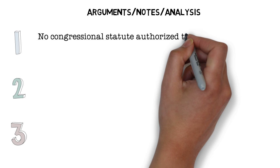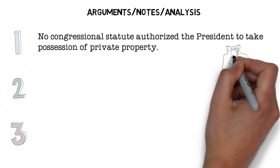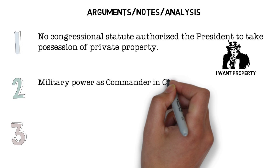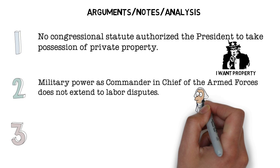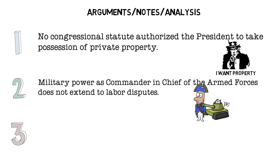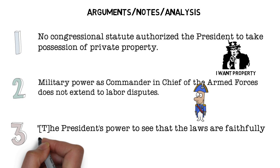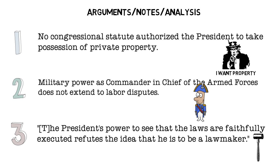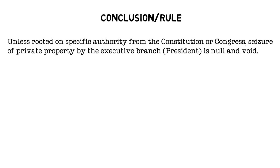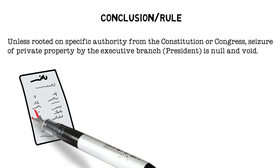The Supreme Court brought up a number of reasons why the government cannot seize the steel mills under President Truman's executive order. First, they stated that no congressional statute authorizes the president to take possession of private property. Second, and this was against Truman's argument that his powers as commander-in-chief gave him the ability to seize the steel mills for the war effort — the Supreme Court found that military power as commander-in-chief does not extend to labor disputes. And finally, the president's power to see that the laws are faithfully executed refutes the idea that he is some sort of lawmaker. The president makes sure that the laws Congress enacts are executed, not that he can create laws.